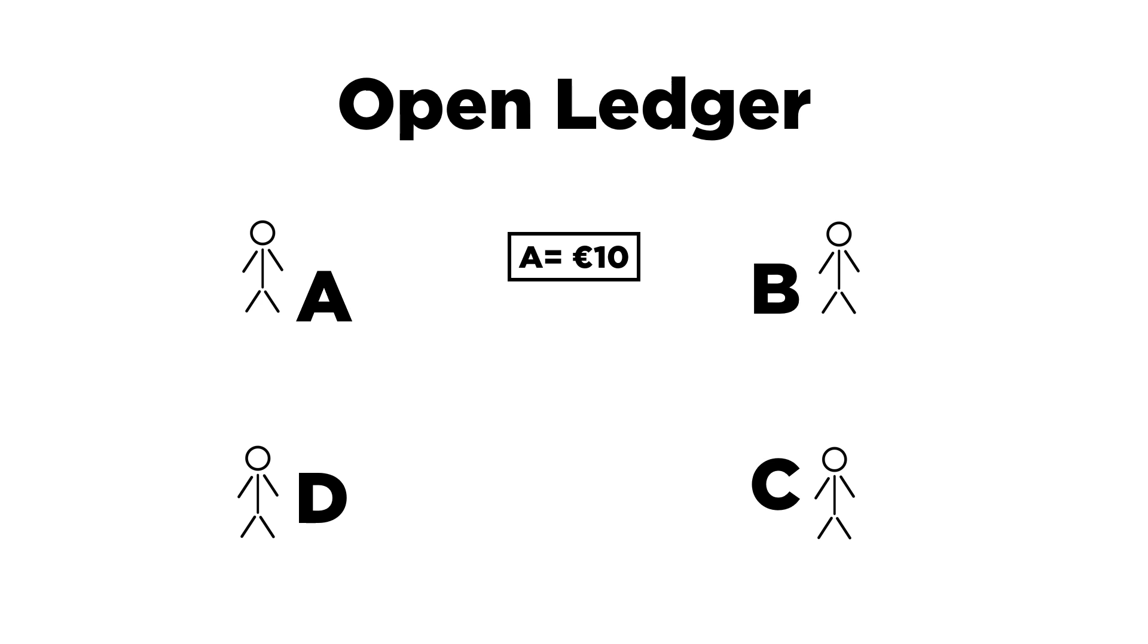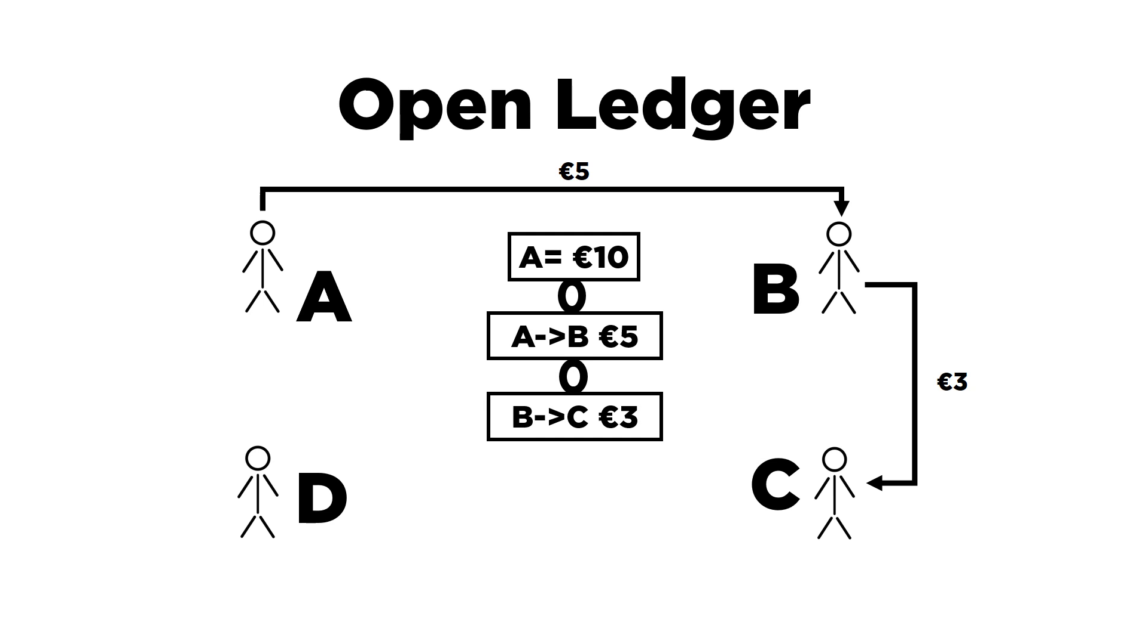Now, A wants to send 5 euros to B. This transaction will be added to the current ledger as a chain. Now, person B wants to send 3 euros to person C. The previous process will be repeated to add this transaction to the ledger. And finally, C wants to send 1 euro to D, and this gets recorded the same way. This is the concept of open ledger.